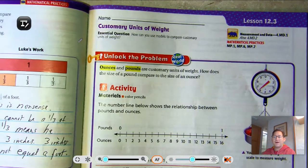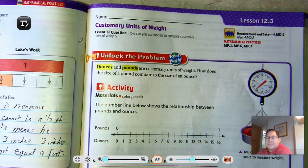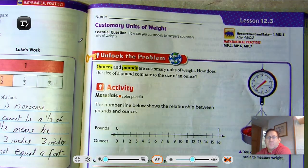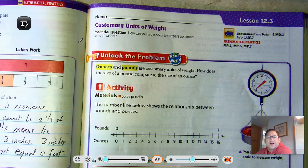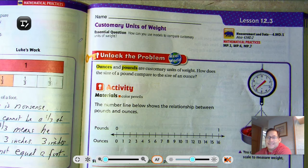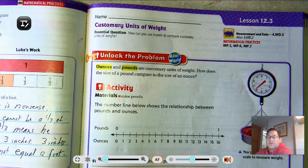Hello everybody. All right. So today's lesson, lesson 12.3, page 479 of your textbook. Our lesson title is Customary Units of Weight. So we're going to be looking at ounces and pounds as well as tons. How can you use models to compare customary units of weight?